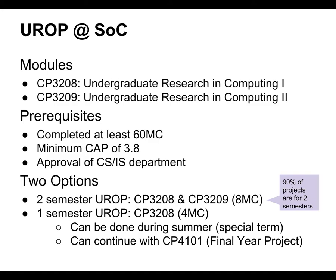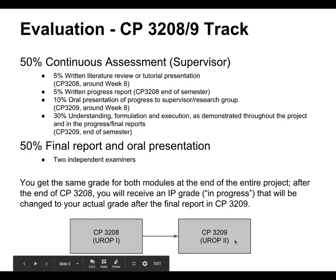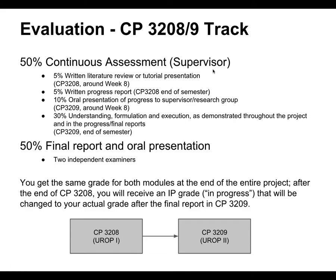Looking at the 90% of projects that are proposed, you have two project modules. 50% of your grade comes from your supervisor, and 50% from two other evaluators. Of the supervisor's 50%, only 10% comes in the first semester, because what can you do in one semester? Basically get a little understanding of the research — formulate the problem, read about it, maybe implement a baseline or study the theory. Then in the second semester you do all the work, implement the solution, get a better proof or tighter bound, and write it up.